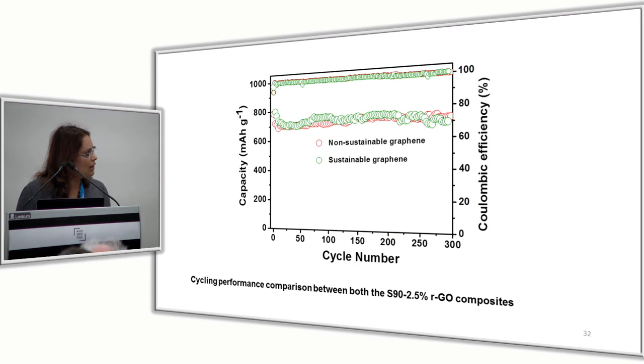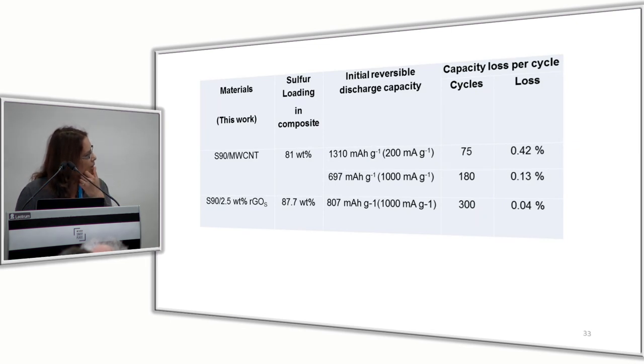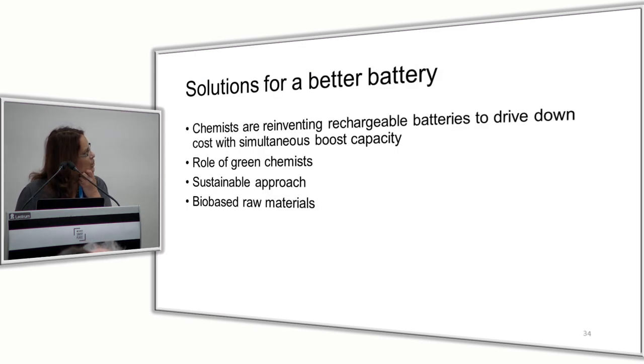These are our results which have been published. We're able to do sulfur loading in the composite up to that weight portion, which is great enough, with good irreversible discharge capacity. Solutions for a better battery: being a chemist, we have to look for various ways to boost this capacity, either through incorporation of more sulfur or by chemically binding it instead of physical encapsulation techniques. The role of green chemistry is looking for sustainable approach, using bio-based raw materials in this direction.